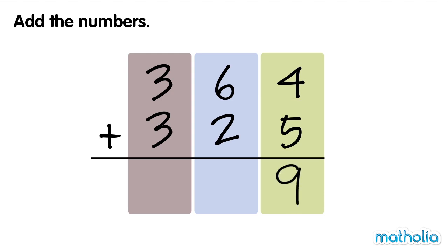Next, we add the 10s. 6 10s plus 2 10s equals 8 10s. Finally, we add the 100s. 3 100s plus 3 100s equals 6 100s. 364 plus 325 equals 689.